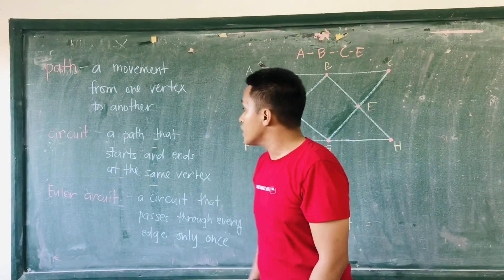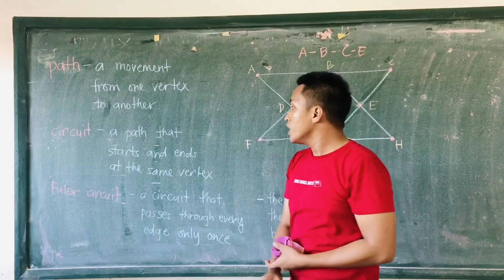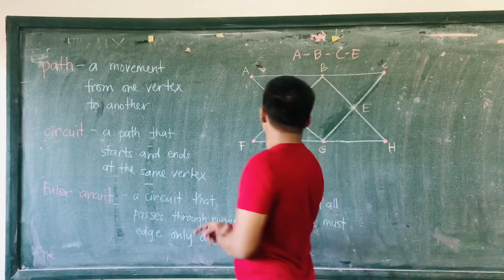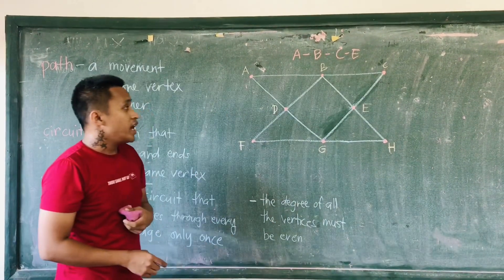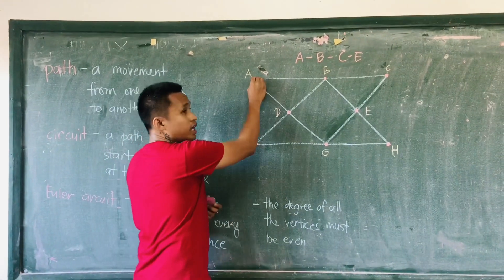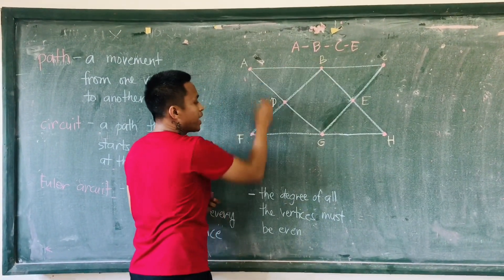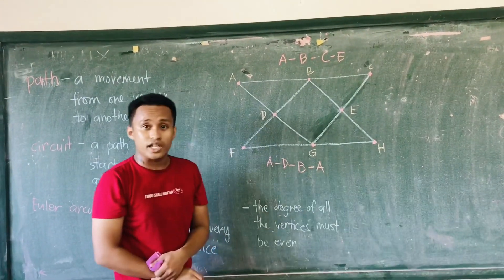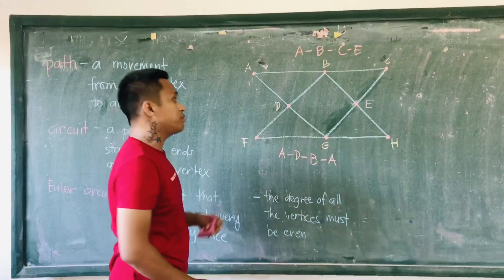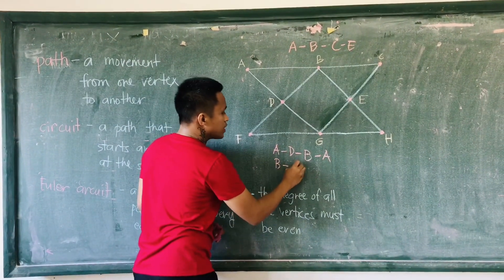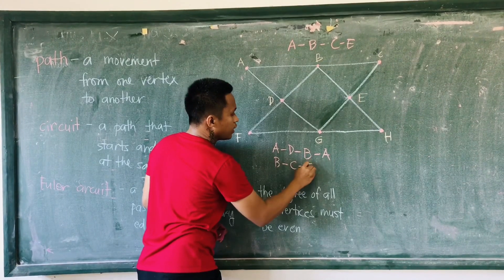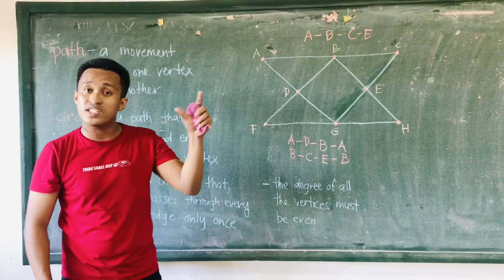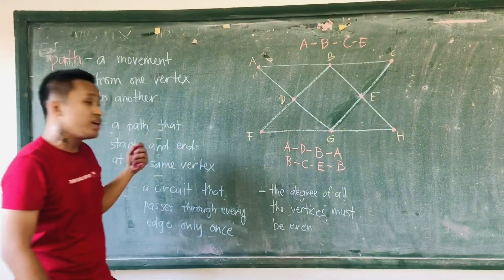Another one is the circuit. When you say circuit, it's a path that starts and ends at the same vertex. An example of a circuit from this figure would be from A to D to B and going back to A. Another example of a circuit would be B to C to E, then going back to D. If you start from a particular vertex and end at the same vertex, then it is called a circuit.